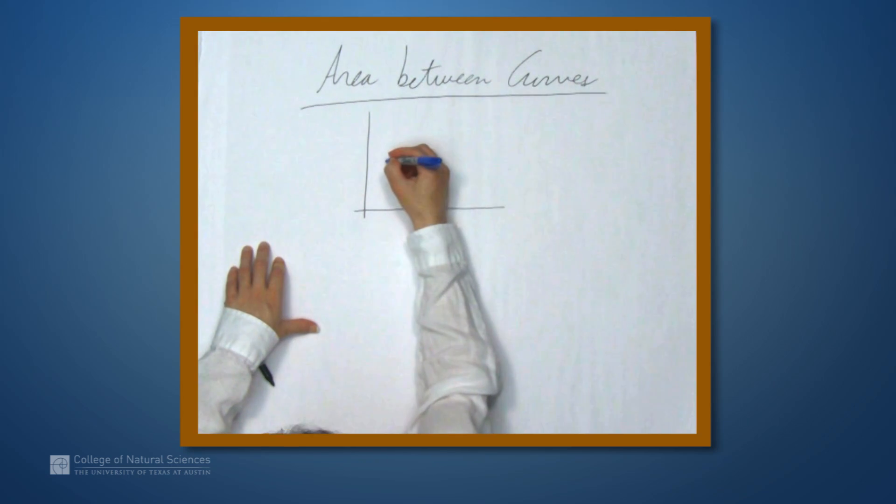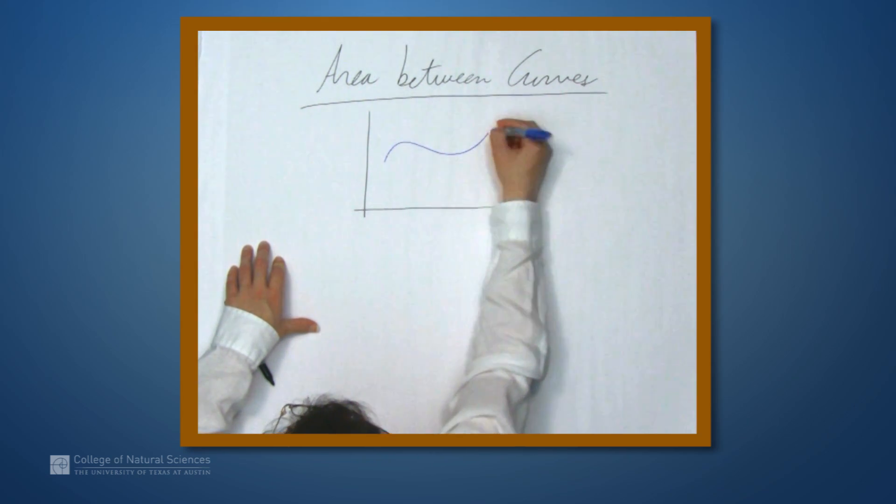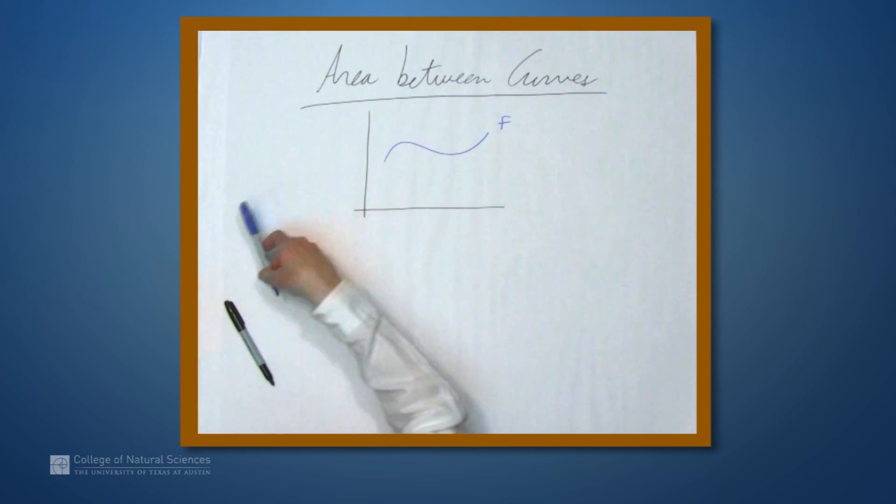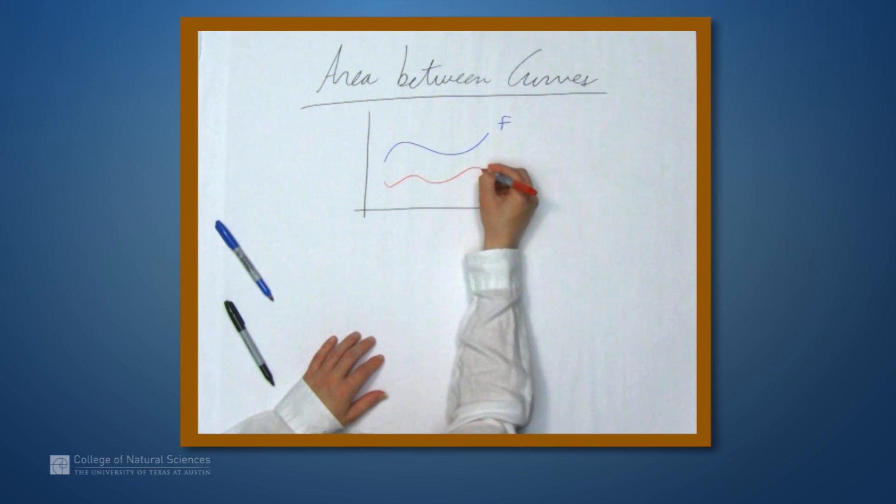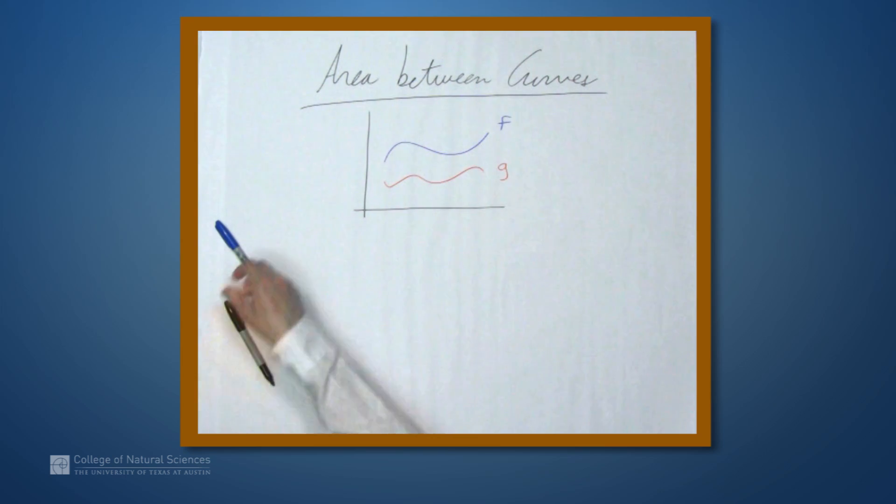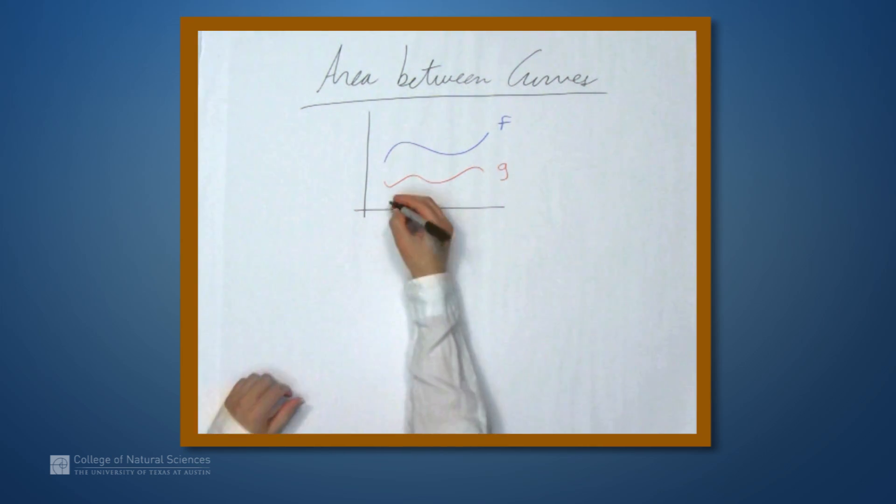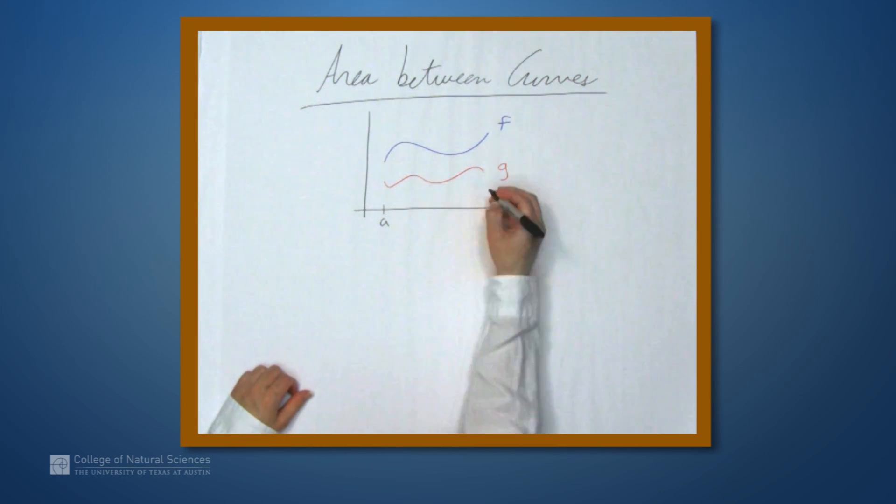We'll start by drawing a picture of just about the simplest example. So let's say we have a function f with a graph like that, and a function g that looks something like that. And we want to talk about the area between f and g, say, on the interval from a to b.